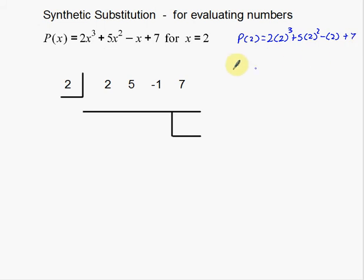And then so this is going to be 2³, which is 8, 8 times 2 is 16, plus 20, minus 2, plus 7. So this is going to be, that's going to be 36, plus 7 is 43. I just lost track of my numbers. Yep, 43, and then 43 minus 2 is 41. So in this case, P(2) is equal to 41.